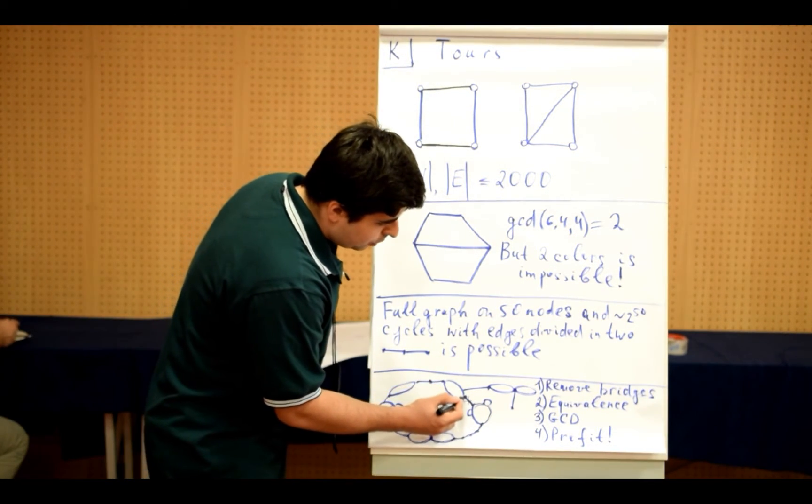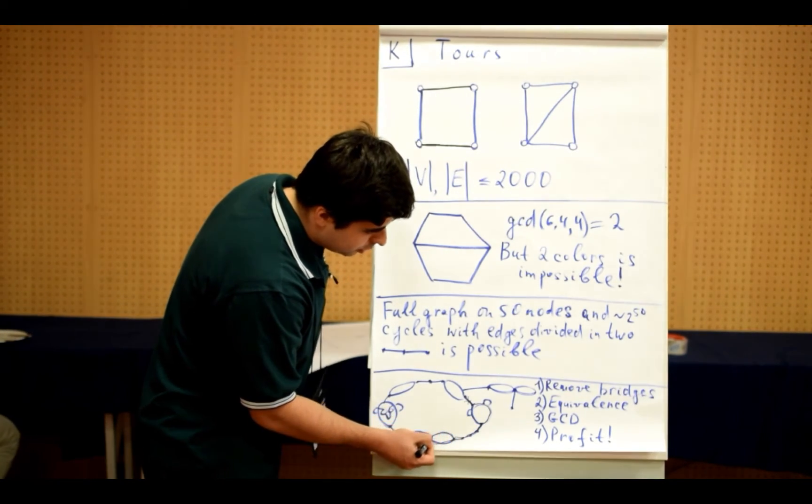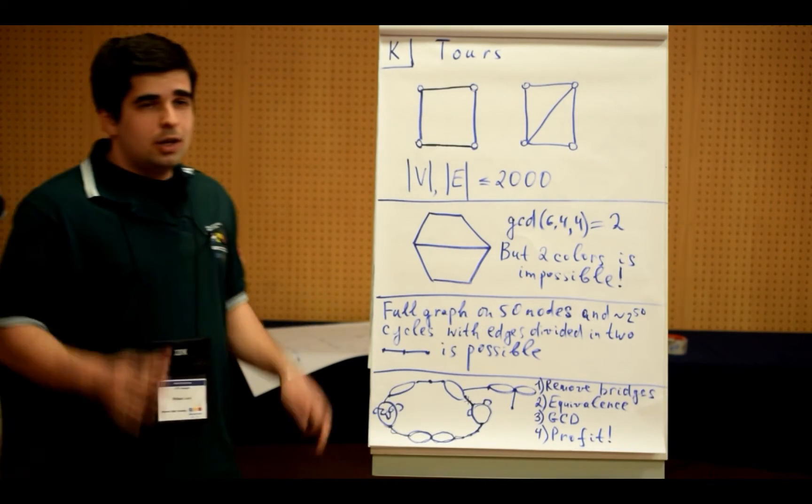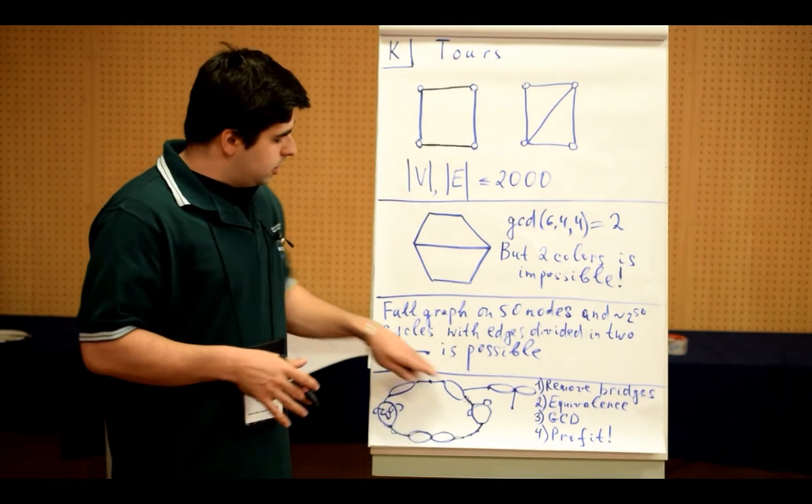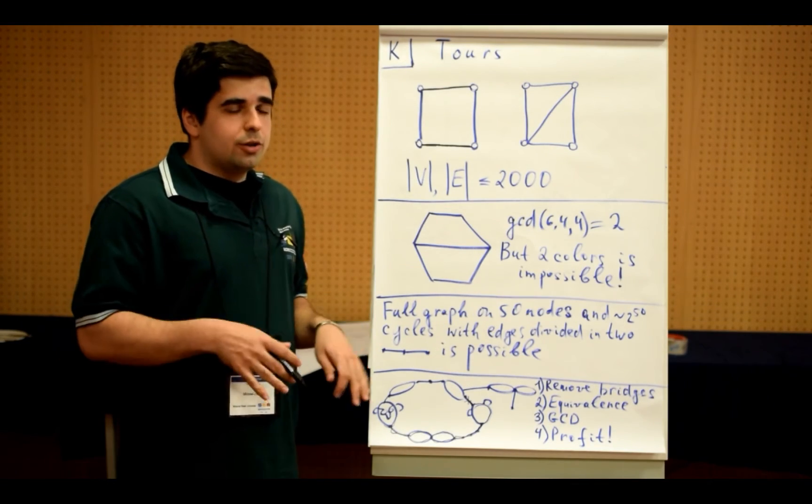Another one would be to go edge, internal part of the cycle, bridge, internal part, bridge, internal part, and so on. So these are two cycles in this graph. And in both of them, the number of edges of each color should be equal.